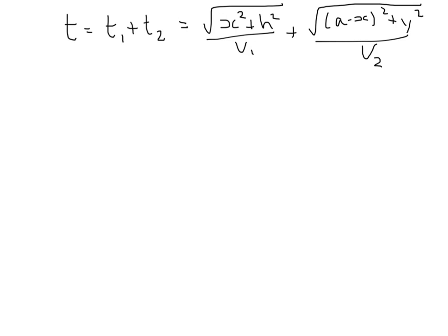We've got this expression for the total time t, which is the time in medium one plus the time in medium two, and we substitute in these expressions for those times. We want to minimize this time. If we think about the graph of this, you get a minimum where the derivative is zero. So first of all we need to calculate what the derivative is and then set it to zero — let's take the derivative with respect to x.